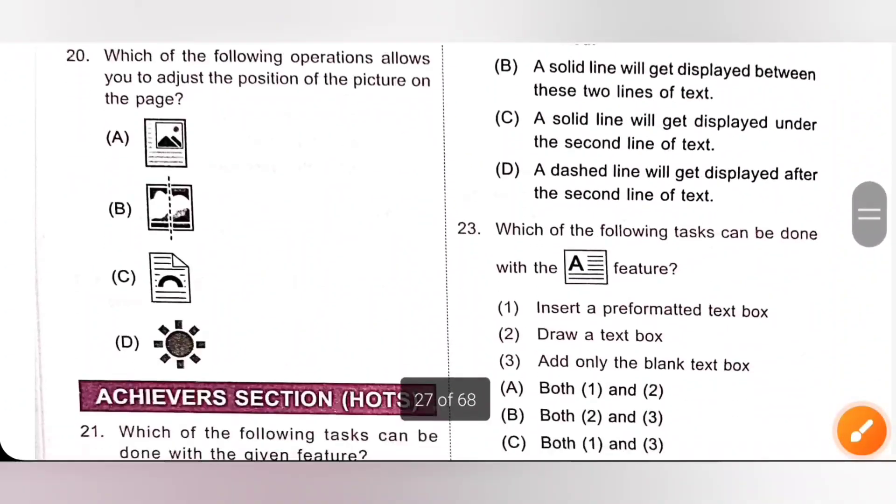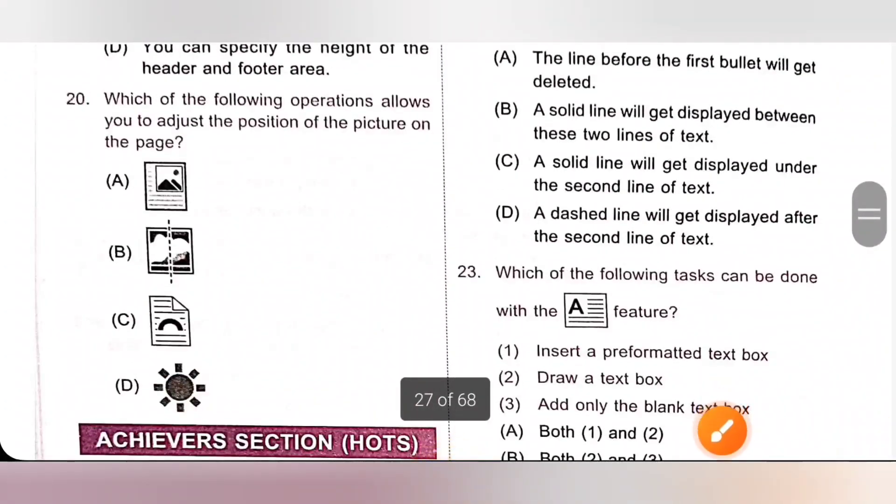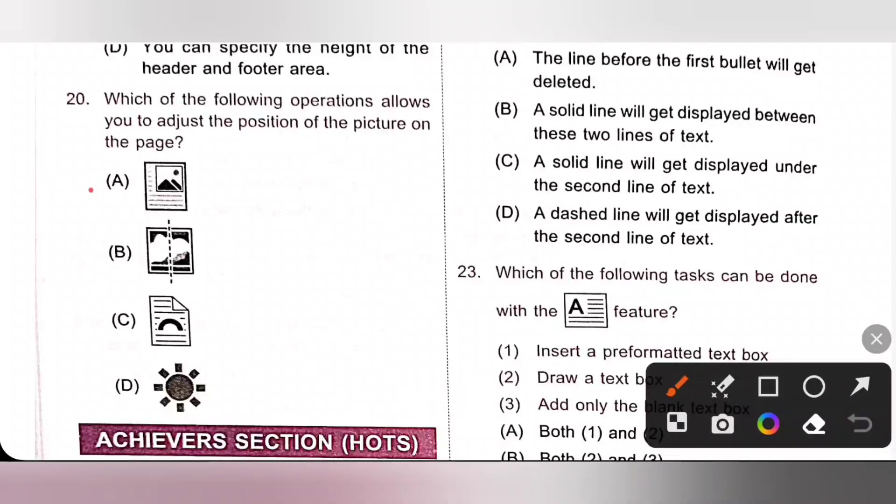Next one: Which of the following operation allows you to adjust the position of picture on the page? Option A, position option, is available under the arrange group of picture format tab of picture tools. It allows us to adjust the position of picture on the page. Option A is the correct answer.